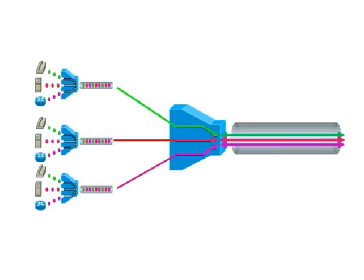DWDM is a multiplexing technique used to increase the bandwidth of single-mode optical fiber, enabling simultaneous transport of several different signals on one fiber wire.